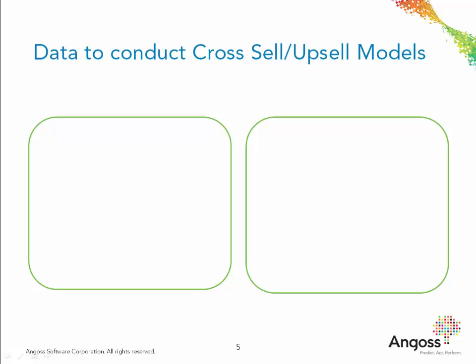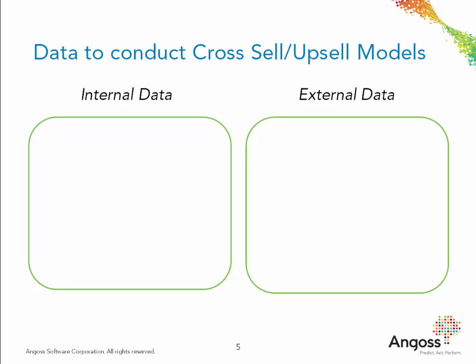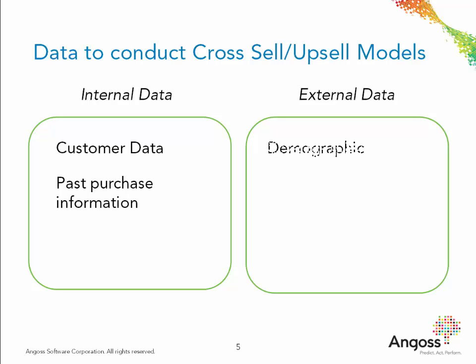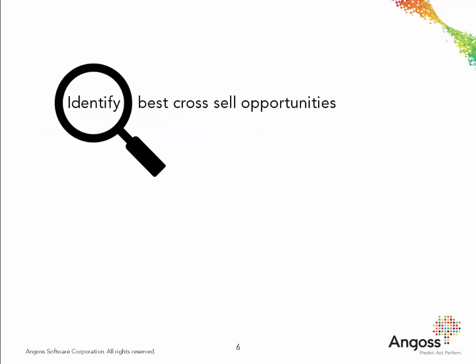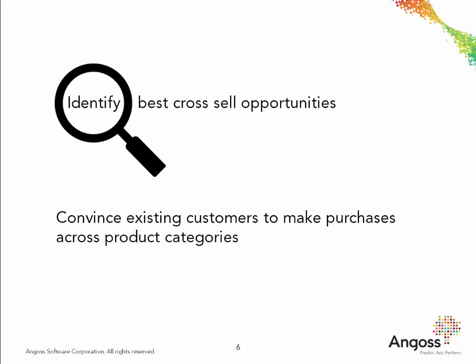The data available for developing up-sell and cross-sell models can contain a large number of fields. The data can be a combination of internal and external data. Internal data is collected from existing customers and can include customer data as well as past purchase information. External data is purchased from data vendors and includes demographic, psychographic, and market research-related data.